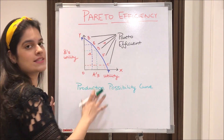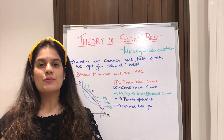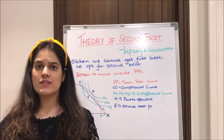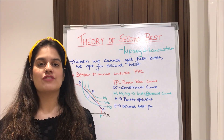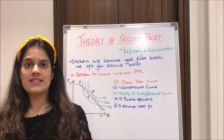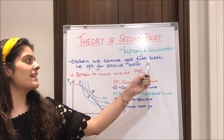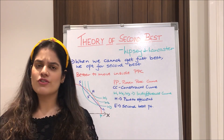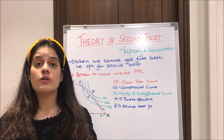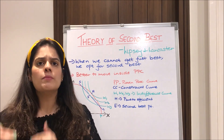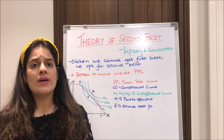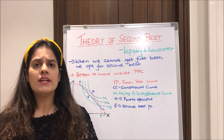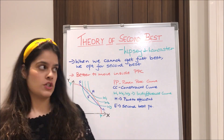Moving ahead to the theory of second best, which was developed by Lipsey and Lancaster in 1956. This theory states that when we cannot get the first best, we opt for the second best — a condition very true in real life as well. When we are unable to satisfy the three conditions of Pareto efficiency, we need to go to the second best option and we might need to move inside the PPC.